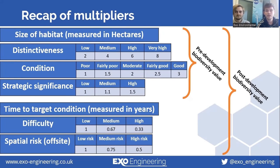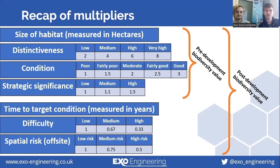When we consider post-development biodiversity value, we take into account the four multipliers used to determine the pre-development biodiversity value, and we also consider the time to target condition measured in years, the difficulty of achieving this, and the spatial risk. The spatial risk only refers to off-site mitigation and offsetting. All of these must be assigned a score by a competent person, which will typically be an ecologist or someone with a significant ecological background.